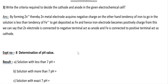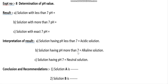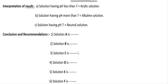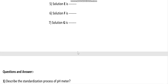Experiment number eight: determination of pH value. Write down the result as follows: solution with pH less than 7 is acidic; solution with pH more than 7 is basic or alkaline; solution with exactly pH 7 is neutral. Interpretation of result is very similar to the result table. Conclusion and recommendation: write down the conclusion using your pH table — solution A is what in nature, whether acidic, basic, or neutral, depending on whether its pH is less than, equal to, or greater than 7. Write this for all seven solutions.